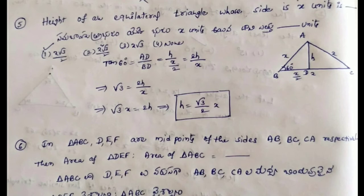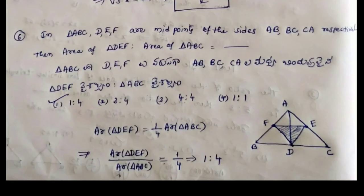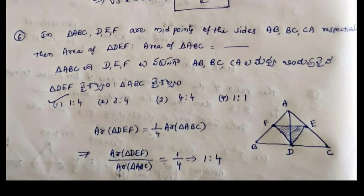The next question: in triangle ABC, D, E, F are midpoints of the sides AB, BC, and CA respectively. Then the area of triangle DEF to area of triangle ABC is what? When midpoints are joined in a triangle, the triangle is divided into 4 equal parts. DEF is one of those parts. So the area of triangle DEF is 1 by 4 of the area of triangle ABC. Therefore the ratio is 1 by 4.